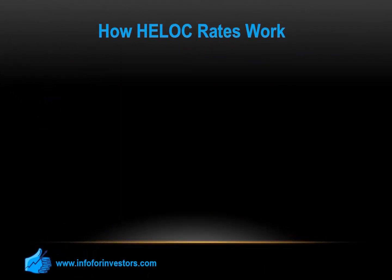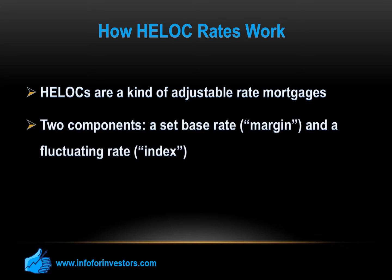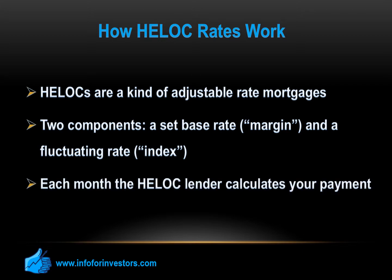Unlike many mortgages, HELOCs are a kind of adjustable rate mortgage. HELOC rates have two components: a set base rate, or margin, and a fluctuating rate called the index. Each month, the HELOC lender will calculate your payment based on your current balance and the combination of these two components to determine your rate. The lender will use your credit score and the amount of equity you have in your home as the basis of the margin for your HELOC.